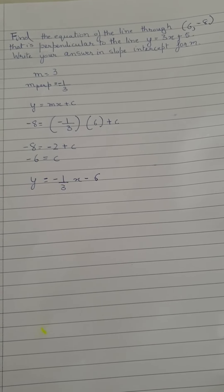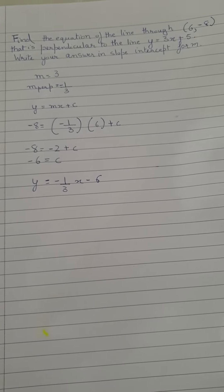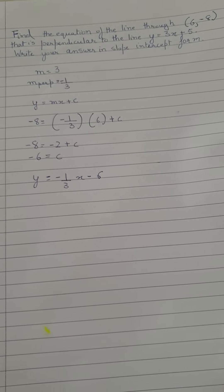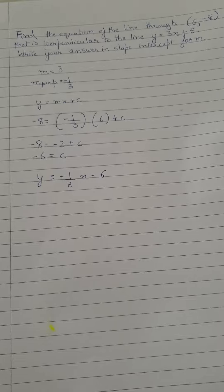Now what do you have to find out? That is c. So -8 = -2 + c. So c comes out to be -6.